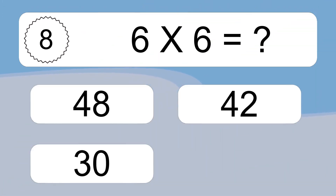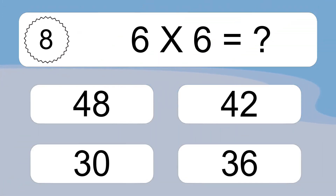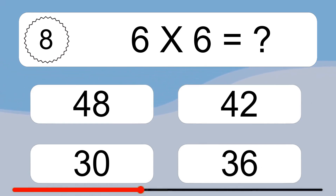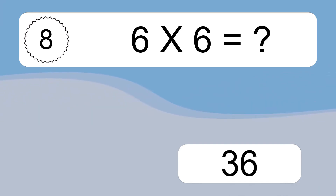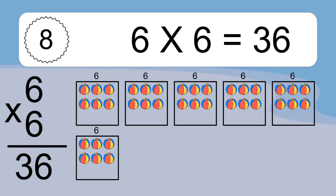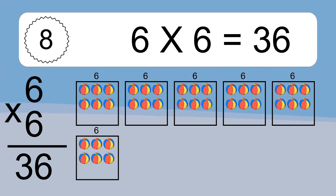6 x 6 equals what? 6 x 6 equals 36. We have 6 boxes, and each box has 6 colorful balls inside. If you count all the balls in all the boxes together, you will have 6 x 6 balls. This equals 36 balls.